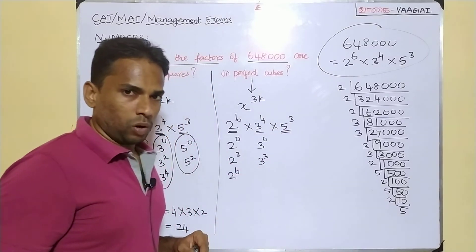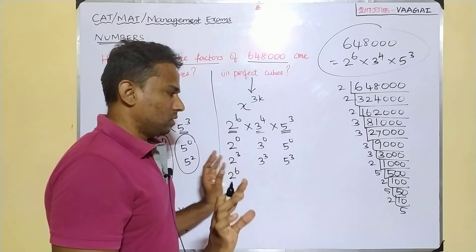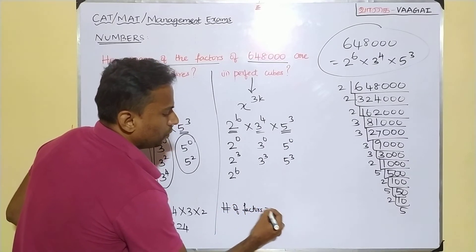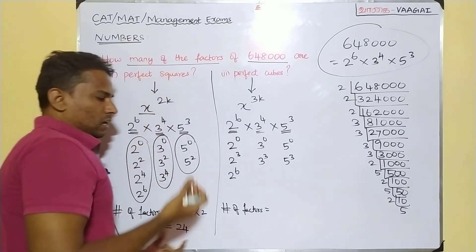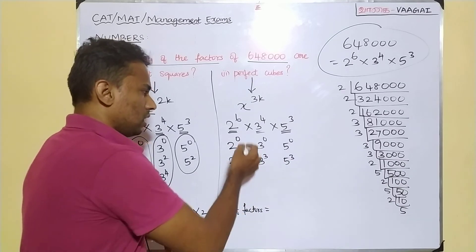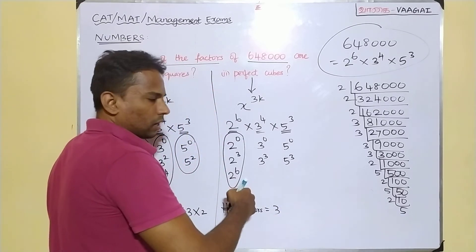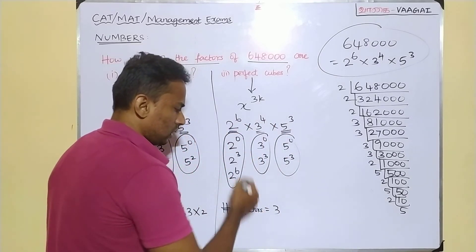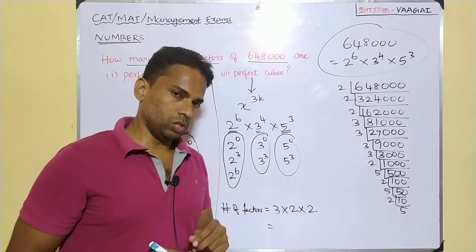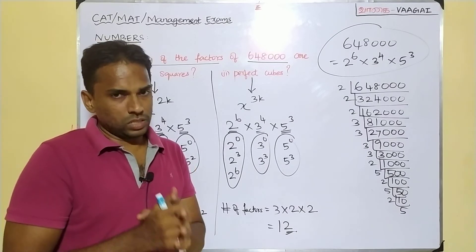For 5³: multiples of 3 up to 3 are 0 and 3 — so 5⁰ and 5³, giving 2 possible values. The number of factors which are perfect cubes equals 3 × 2 × 2 = 12. So we have 24 factors that are perfect squares and 12 factors that are perfect cubes for the number 6,48,000. The process is now complete for both subdivision questions.